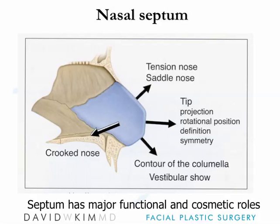The septum is the partition that separates the two sides of the nose, but it serves more than a partition. It serves as the foundation of the nose, and it has lots of implications in rhinoplasty. If the septum is too high along the bridge, you create a bump. If the septum is crooked along the front or along the bridge, the nose can be crooked. And if the septum is deviated internally, it creates breathing problems.